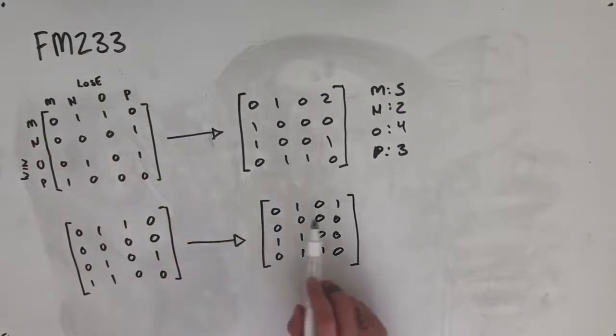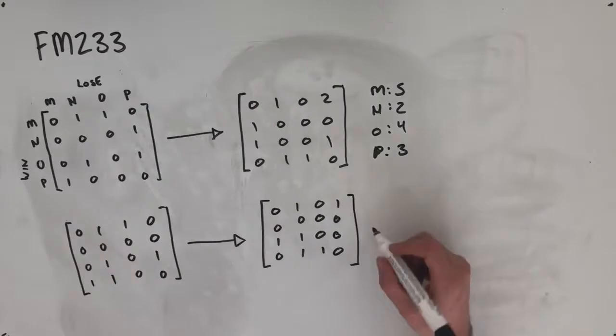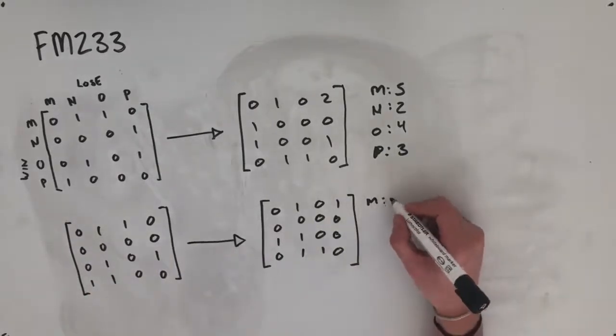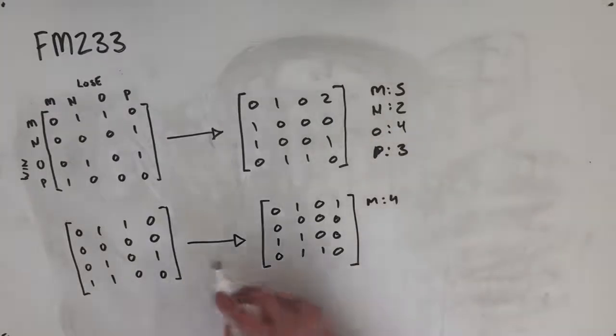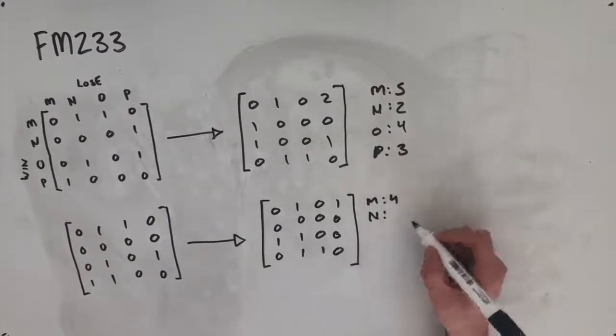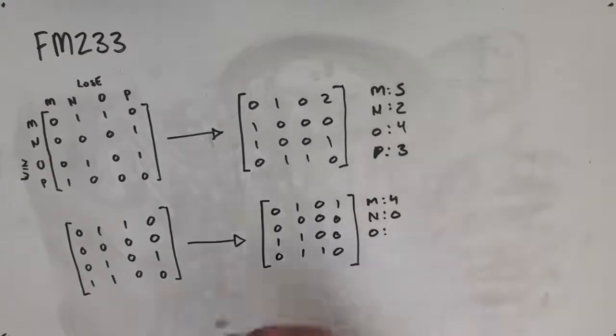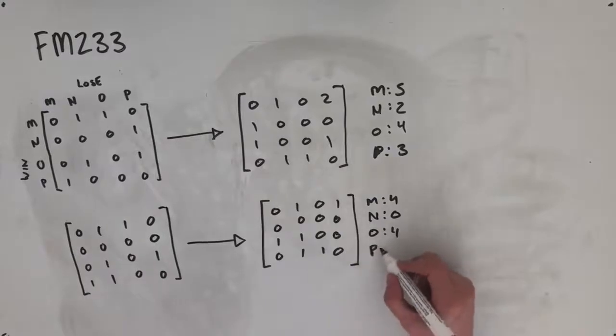If we square this, we get the two-step dominance matrix. Now, tallying up all of our scores, M has a one and two-step dominance of 4, N has a one and two-step dominance of 0, O has a one and two-step dominance of 4, and P has a one and two-step dominance of 4.